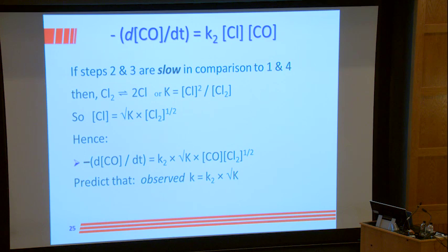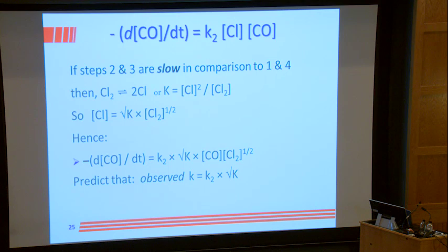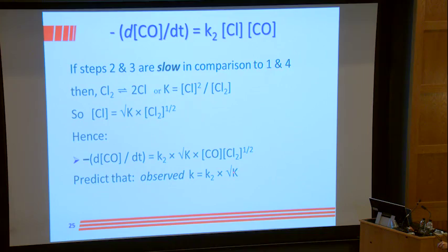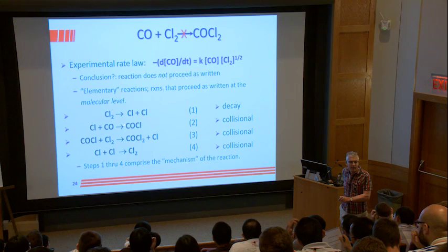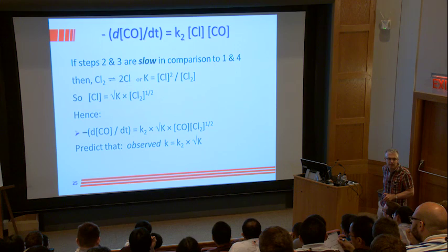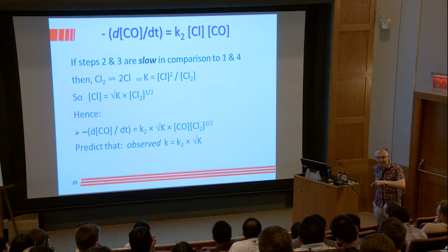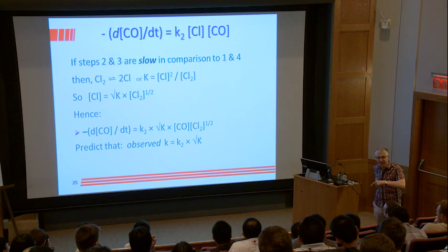To prove the mechanism, you'd need to measure the rate constant for reaction 2 independently, then check whether the overall rate constant equals that measured rate constant times the square root of the equilibrium constant. That would prove the mechanism.